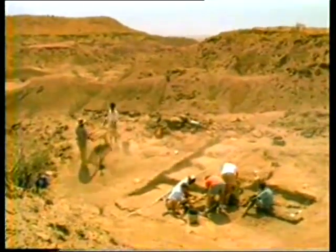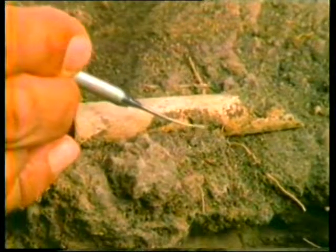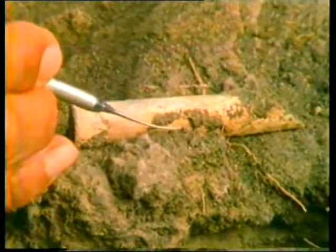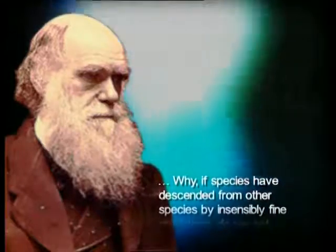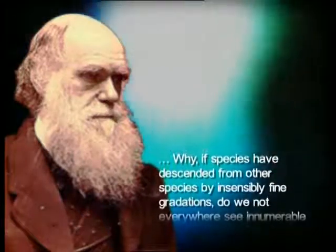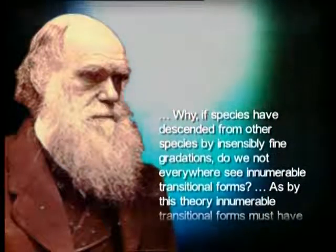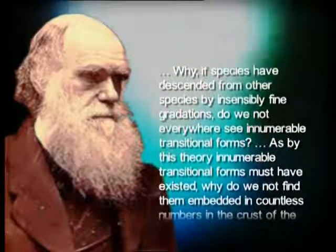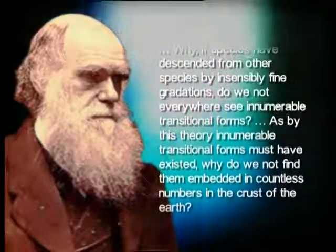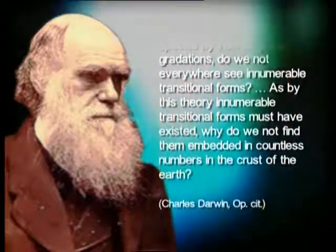That's why he devoted a special chapter in his book to the matter, where he posed these worrisome questions: 'Why, if species have descended from other species by insensibly fine gradations, do we not everywhere see innumerable transitional forms? As by this theory, innumerable transitional forms must have existed. Why do we not find them embedded in countless numbers in the crust of the earth?'